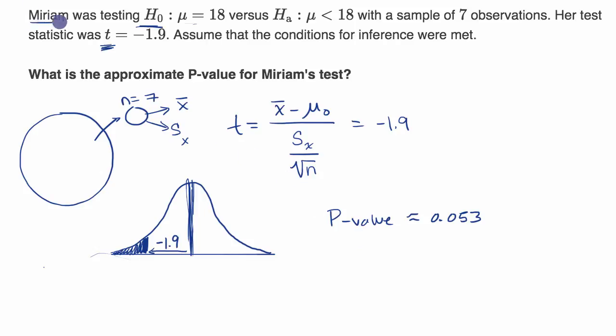And then what Miriam would do is compare this p-value to her preset significance level, to alpha. If this is below alpha, then she would reject her null hypothesis, which would suggest the alternative. If this is above alpha, then she would fail to reject her null hypothesis.